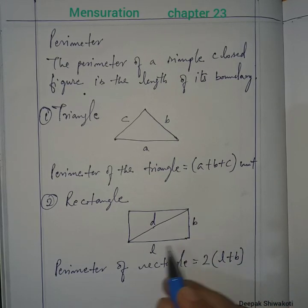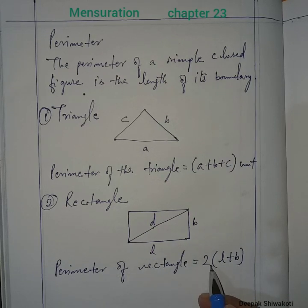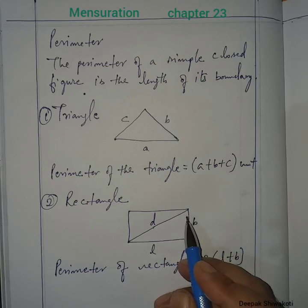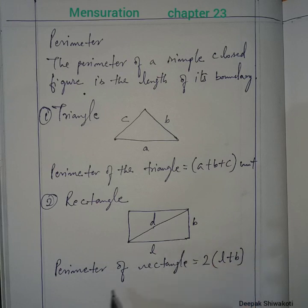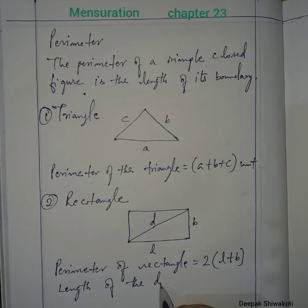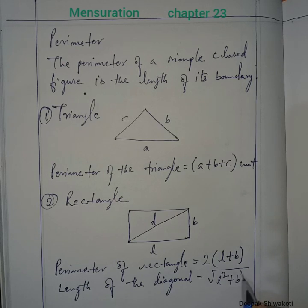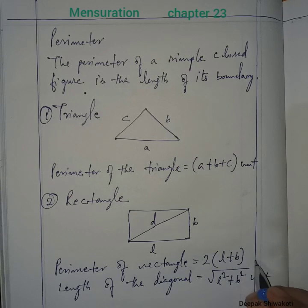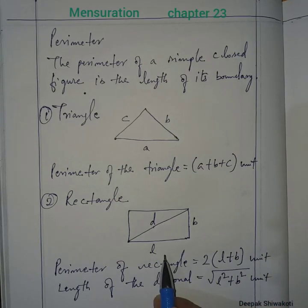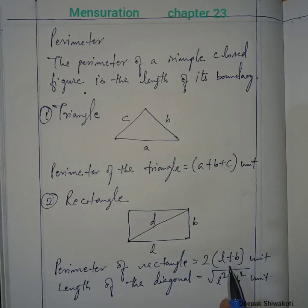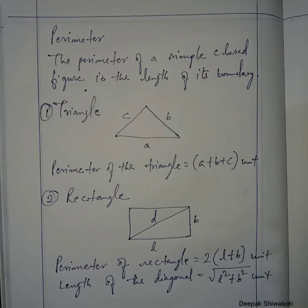The reason is there are 2 lengths and 2 breadths, so 2 is taken as common and (length + breadth) gives the perimeter of the rectangle. The length of the diagonal is given by: square root of (l² + b²) units. The unit of the diagonal length is the same unit of length supplied in the problem.